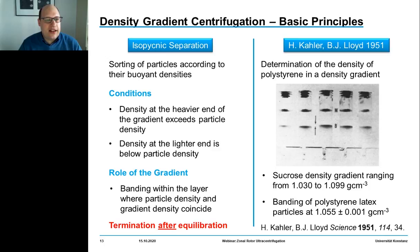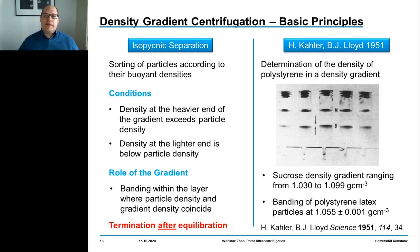Way better separations can be achieved using density gradient centrifugation. There are two different ways to perform density gradient centrifugation. The first is termed isopycnic separation, also known as buoyant density separation, where you classify the particles according to their buoyant density.